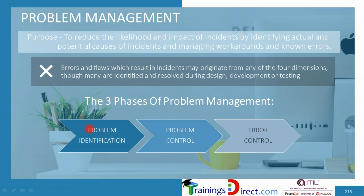Problem management has three phases: problem identification, problem control, and error control. Many of these basics have been covered at the ITIL foundation level. In problem identification, the problem is identified through various sources and recorded. In problem control, the problem analysis begins, a known error record is created, and there may be attempts to create a workaround — which can also happen during problem identification.